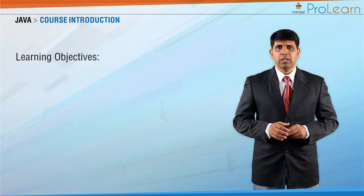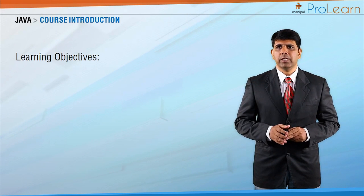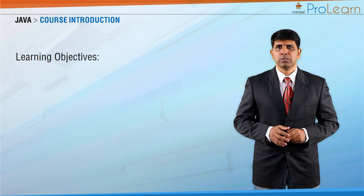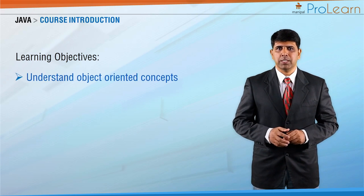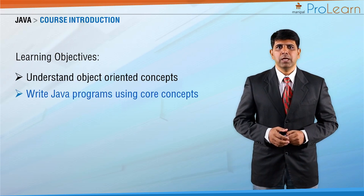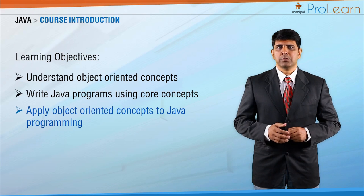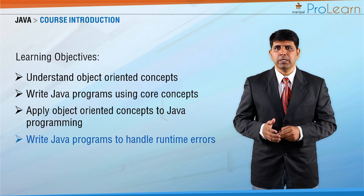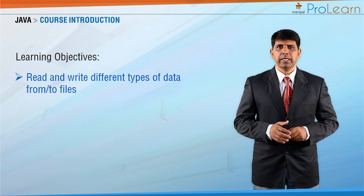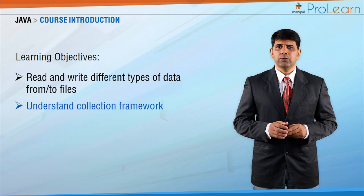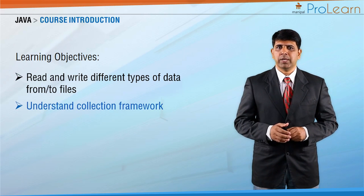Now, let's have a look at the learning objectives. After completing this course, you should be able to understand object-oriented concepts, write Java programs using core concepts, apply object-oriented concepts to the Java programming language, write Java programs to handle runtime errors popularly known as exceptions, and read and write different types of data from files. You will also understand the very powerful collection framework provided in Java.